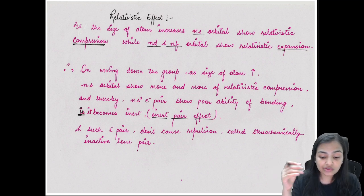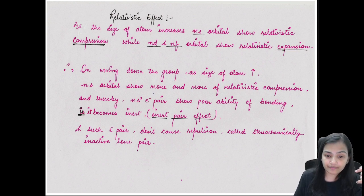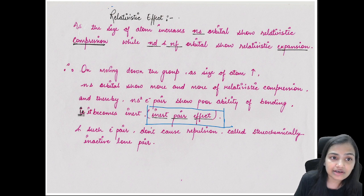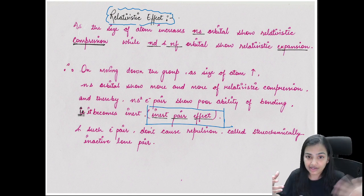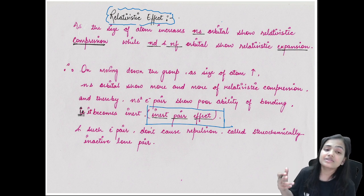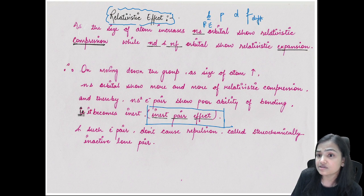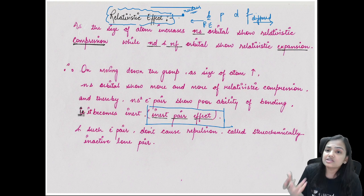Before looking at trends and irregularities, we need to learn about the inert pair effect. First, let's understand the relativistic effect - the tendency of orbitals to move closer to or further from the nucleus. S orbitals show relativistic compression (move closer to nucleus due to high penetration), while D and F orbitals show relativistic expansion (move away from nucleus as they are more diffused). This effect becomes significant as atomic size increases going down a group.